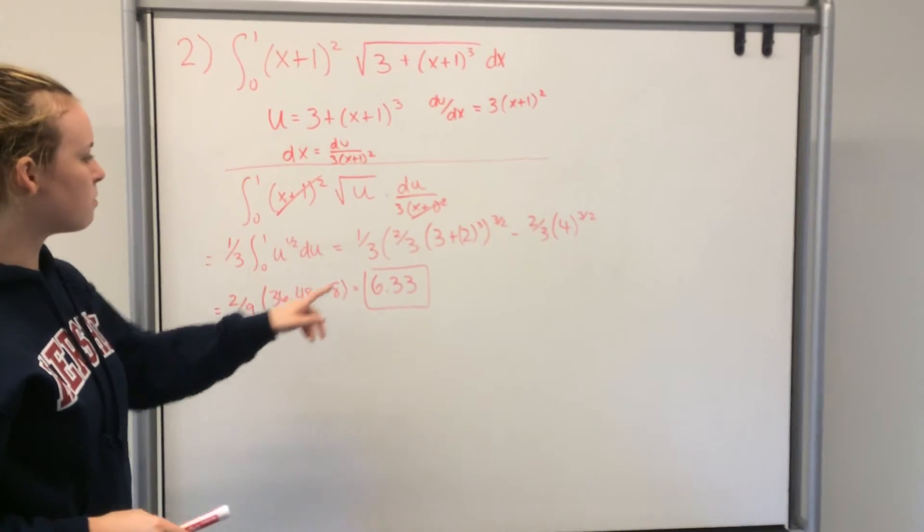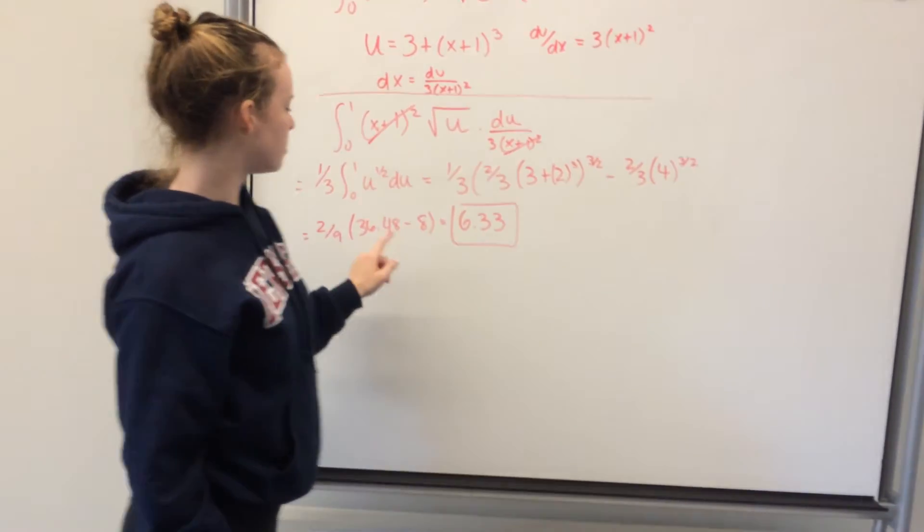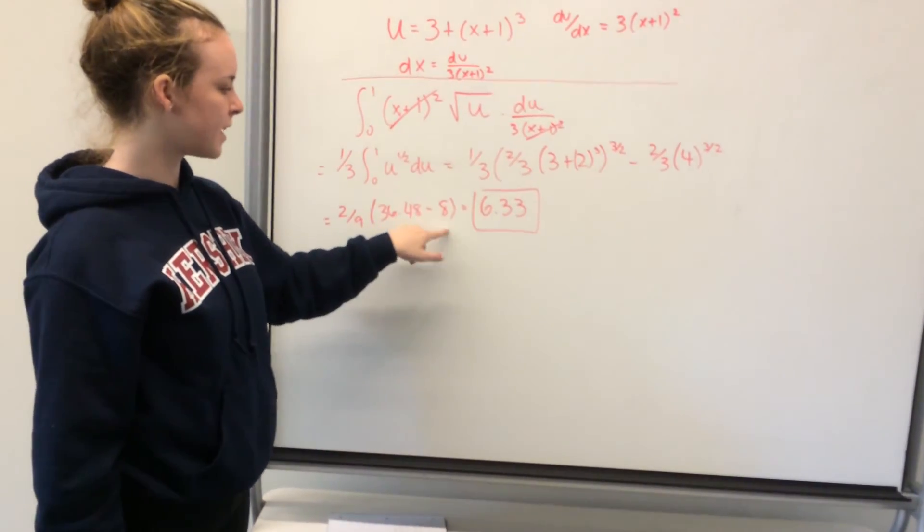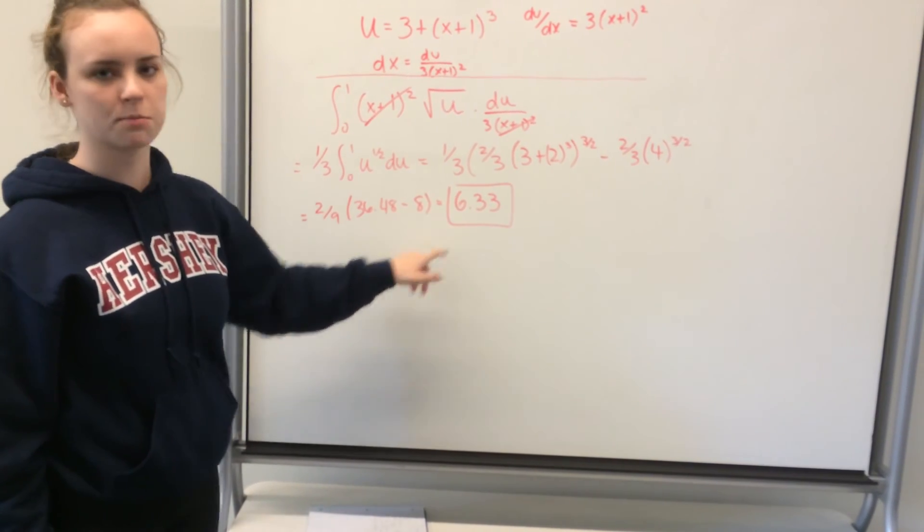Now you multiply the 1 third by 2 thirds, you get 2 9ths, and then you simplify both these terms to get 36.48 minus 8, so 2 9ths times the difference of these two numbers is 6.33.